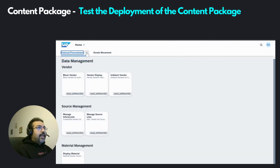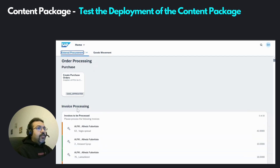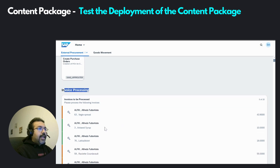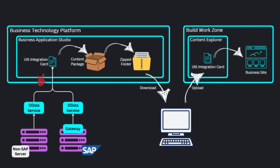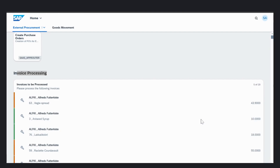Now if you go back to our business site and go to the Order Processing page, here we will be able to see the new section Invoice Processing, and within that section the card we had added. This card was created in the Business Application Studio. Then along with the Senior Reviewer role, it was packaged into the content package. The content package was then downloaded and uploaded back into the content manager on the Build Work Zone. We assigned the Senior Reviewer role to the business site and also to our user ID in the BTP sub account. There was no need for the application-to-role assignment because that's already done in the role.json file we had created. And so the card is now visible with our credentials.